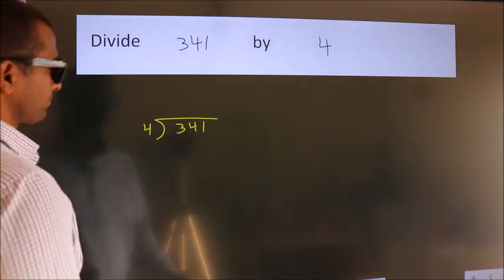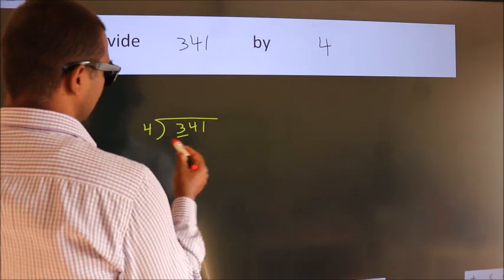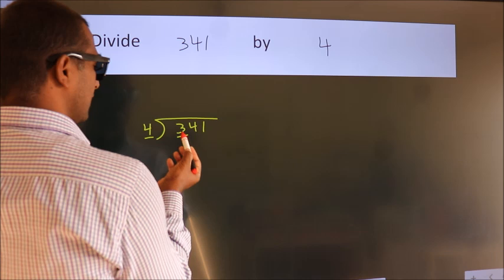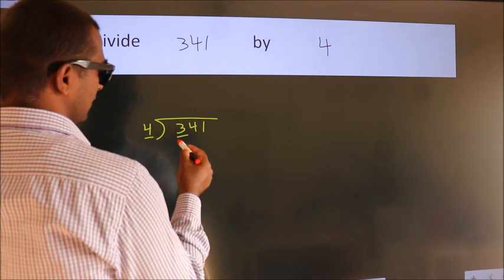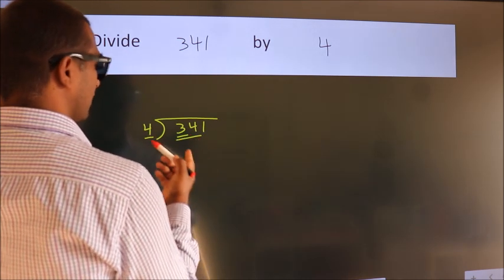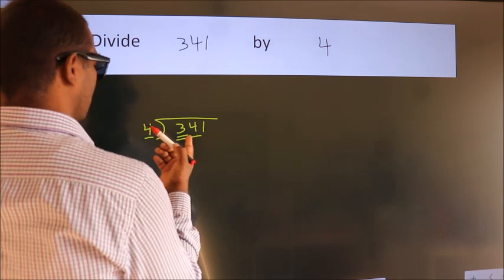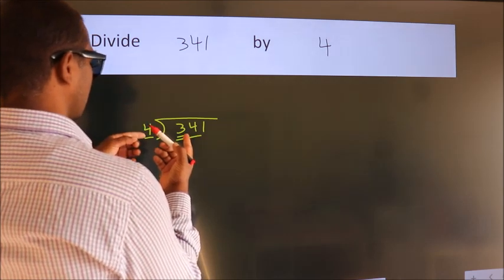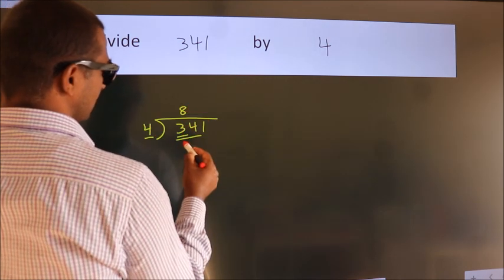Next. Here we have 3, here 4. 3 is smaller than 4, so we should take 2 numbers, 34. A number close to 34 in the 4 table is 4 times 8, which is 32.